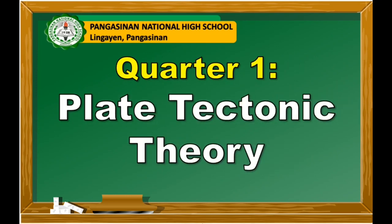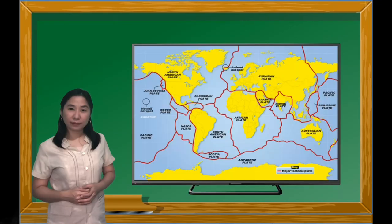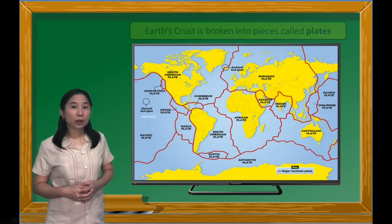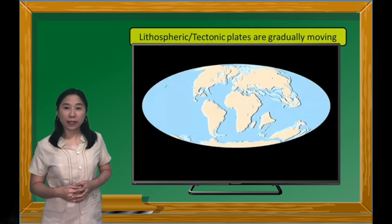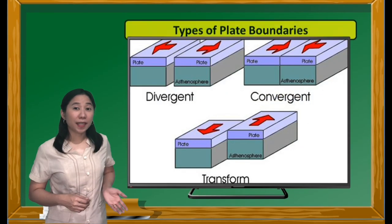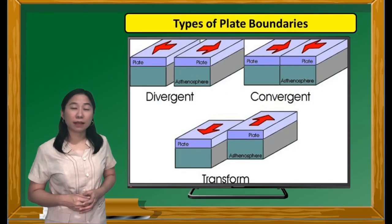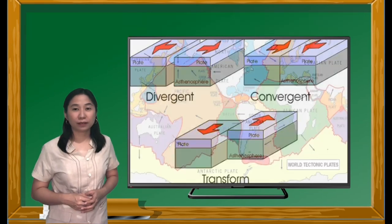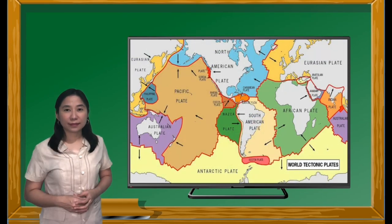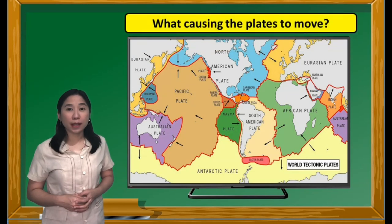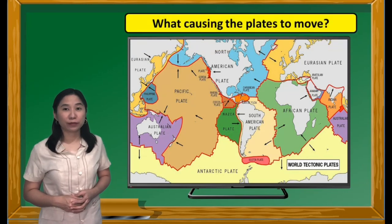Plate Tectonic Theory. The Earth's crust is broken into pieces called plates that are gradually moving. These plates are moving convergingly, divergingly, or sliding from one another. But what is really happening beneath the Earth's crust that's causing the plates to move?